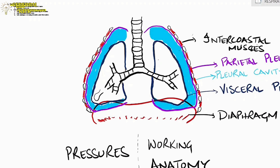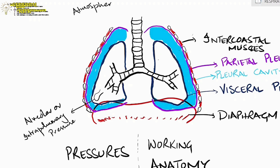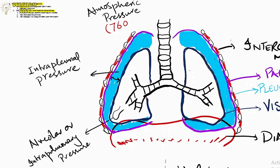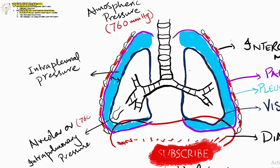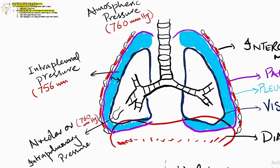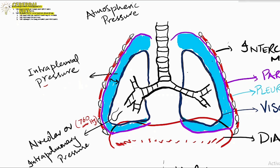There are three pressures you need to know. First, alveolar pressure — at end expiration, alveolar pressure reaches zero, equal to atmospheric pressure. Second, atmospheric pressure — at sea level this is 760 mmHg. Third, intrapleural pressure, which will always stay negative — for example, 756 mmHg in absolute terms. At end expiration, alveolar pressure equals atmospheric pressure, but intrapleural pressure remains negative.